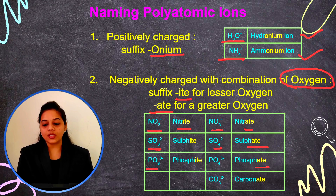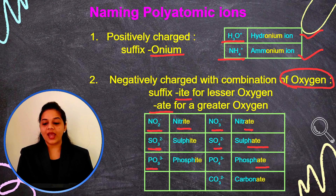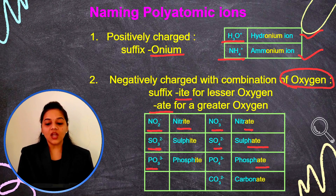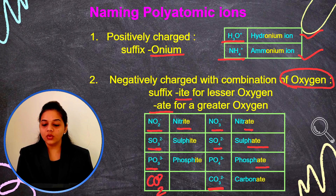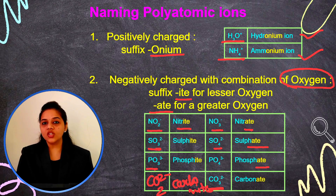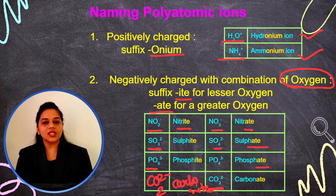For phosphorus: PO3 three-minus is phosphite and PO4 three-minus is phosphate — three oxygens in phosphite and four oxygens in phosphate. For carbon: CO3 two-minus is carbonate, and CO2 two-minus is carbonite. So for lower oxygen count we add '-ite' as the suffix, and for higher oxygen count we add '-ate' as the suffix.